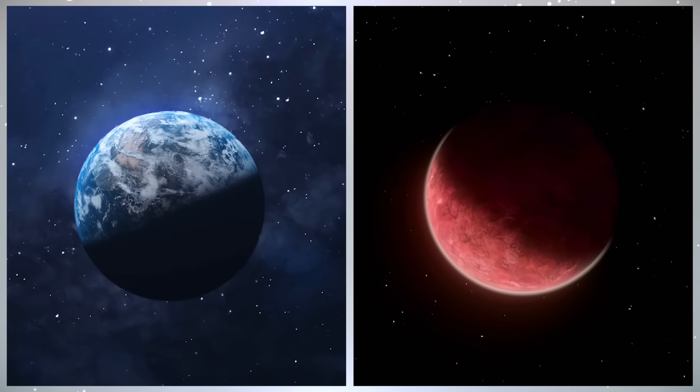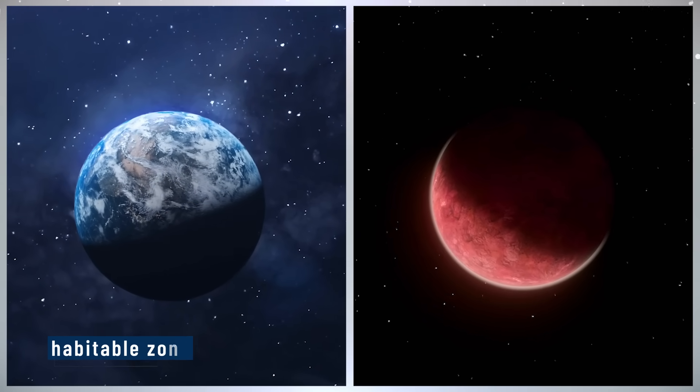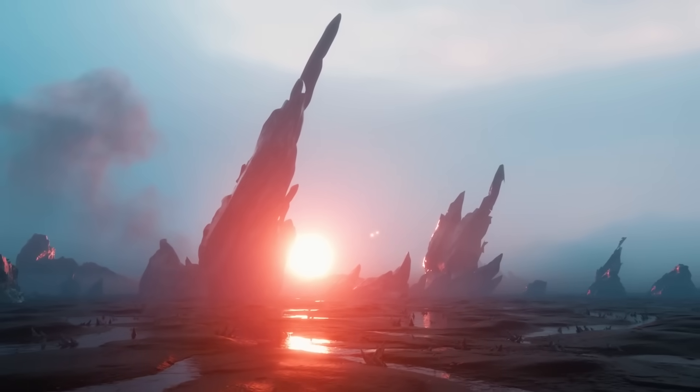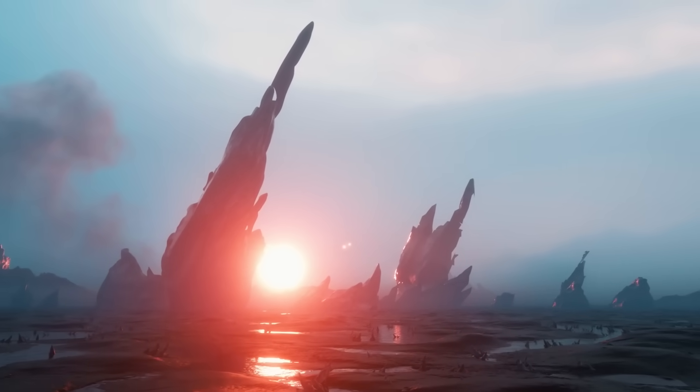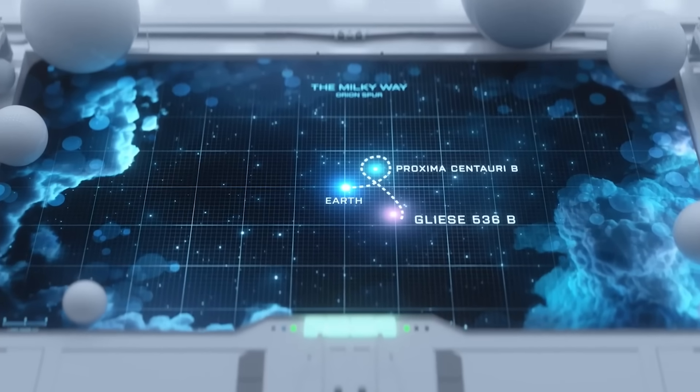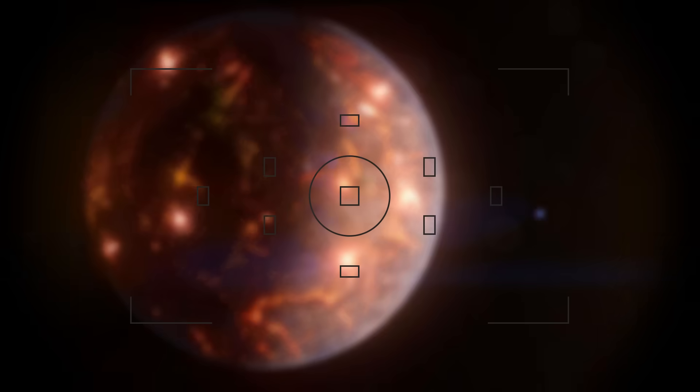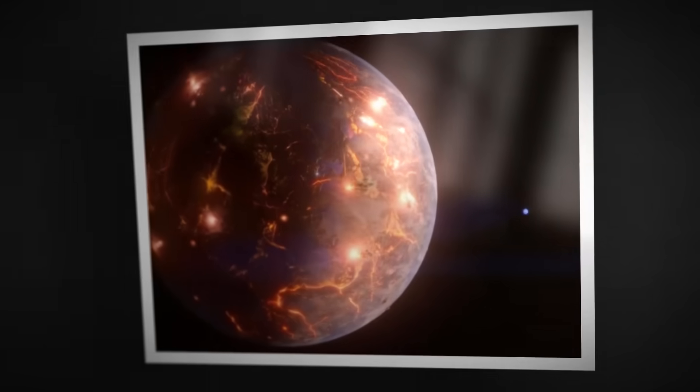It's nearly the same size as Earth and sits in the habitable zone, where conditions could allow liquid water to exist. Until now, it was just numbers - mass, distance, orbital speed. But today, for the very first time, it's an image.